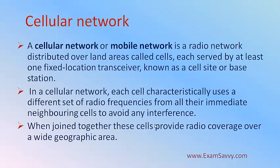Next is the cellular network, also called a mobile network. It is a radio network distributed over land areas, which is why we call the areas cells. Each cell is served by at least one fixed-location transceiver — meaning there is a transmitter and receiver available at all times — called a base station or cell site. This is what a cellular network is and how mobile communication happens.